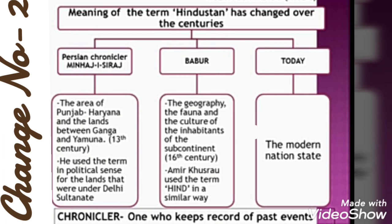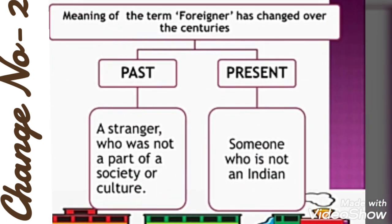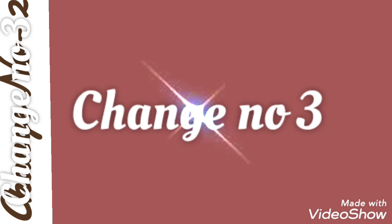Let us take another example: the word foreigner. We know who a foreigner is now — someone who is not an Indian. But in the past, a stranger who was not a part of a society or culture was considered a foreigner. For example, a person from Arnagula, if he went to Kannur, was considered a foreigner in the past. So that is the difference.